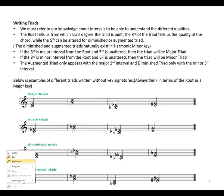Writing of triads. We must refer to our knowledge about intervals. We learned about the different intervals to understand the different qualities of a triad. The root tells us from which scale degree the triad is built. The third of the triad tells us the quality of the chord, while the fifth can be altered for diminished or augmented triads.